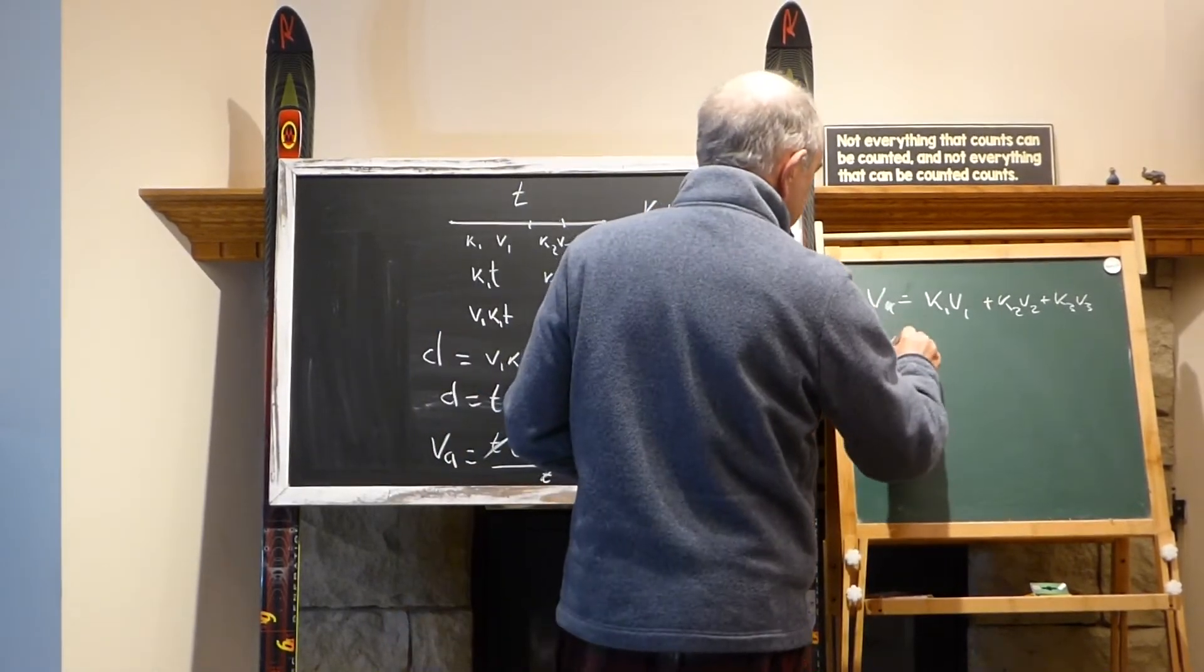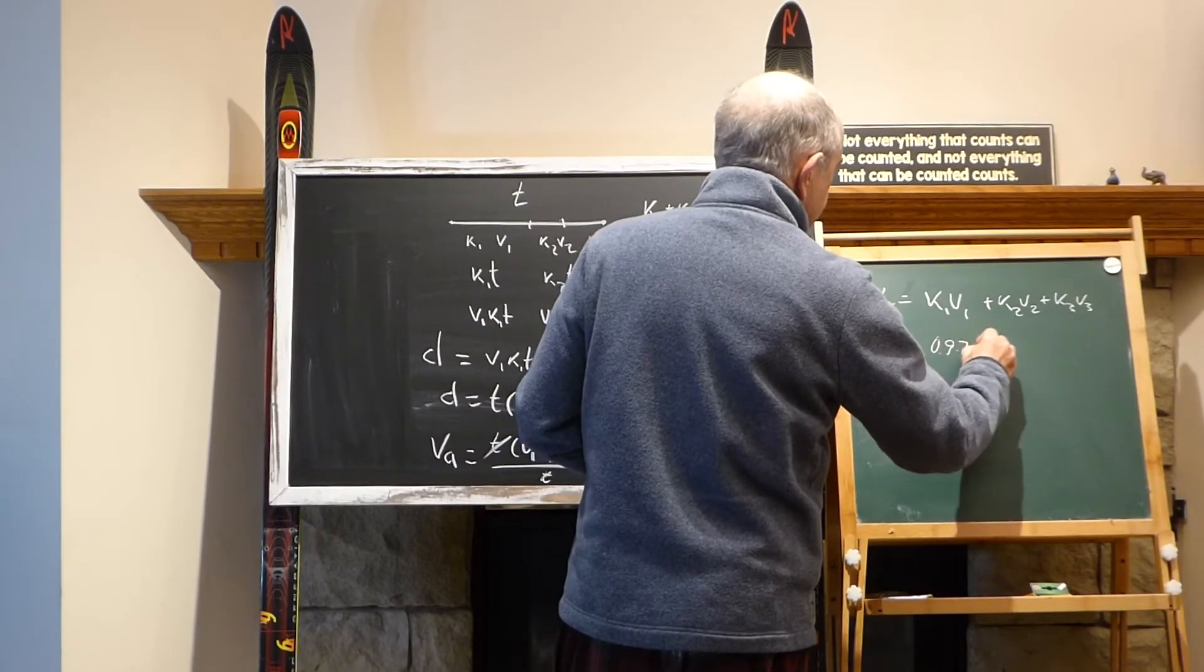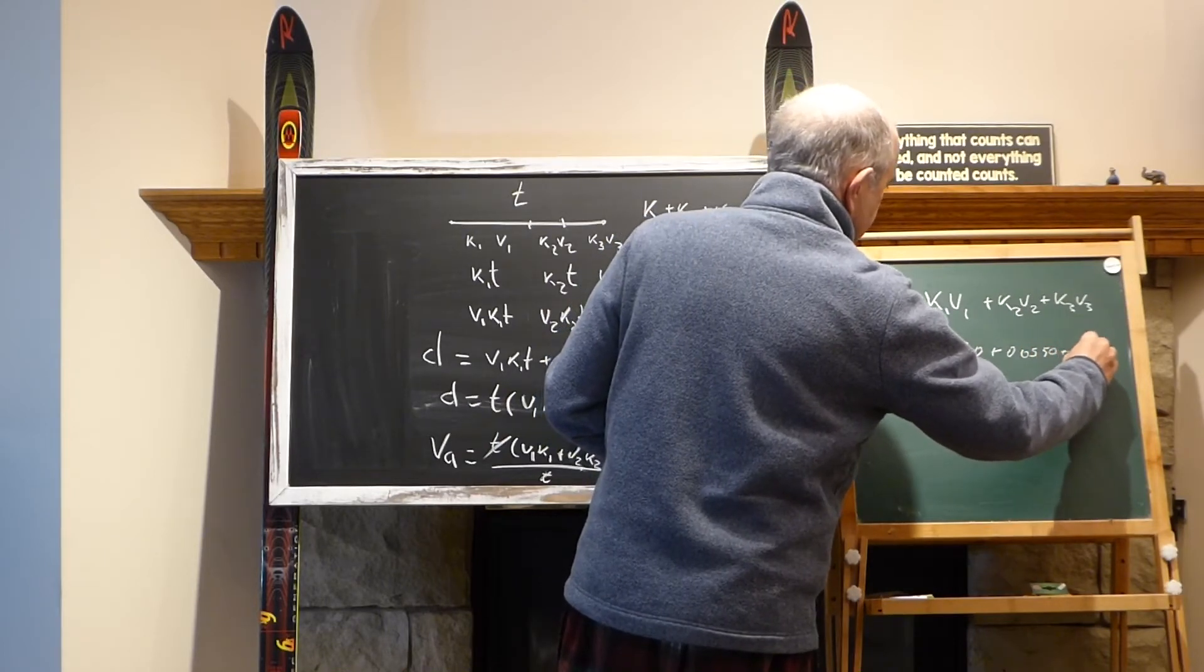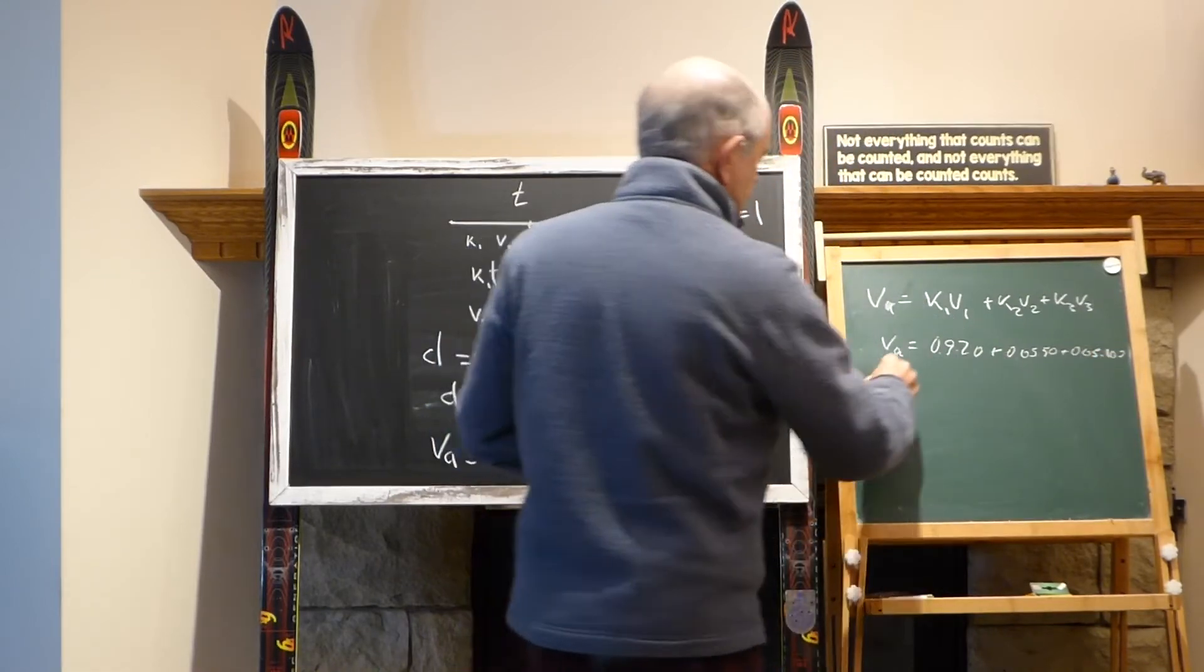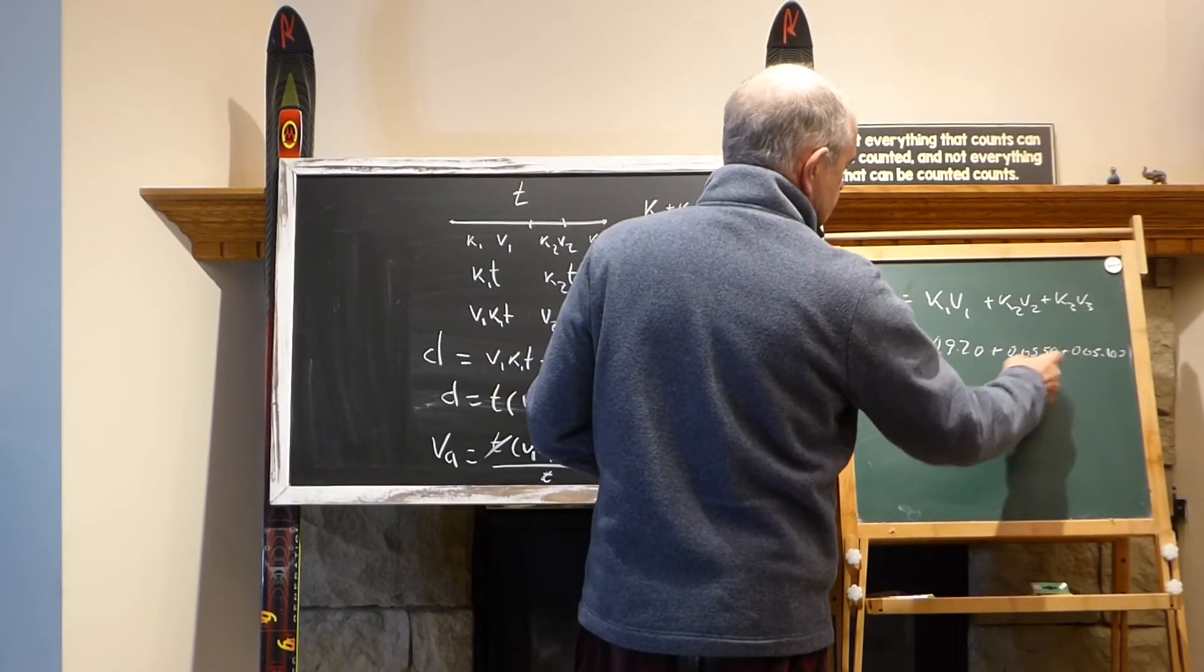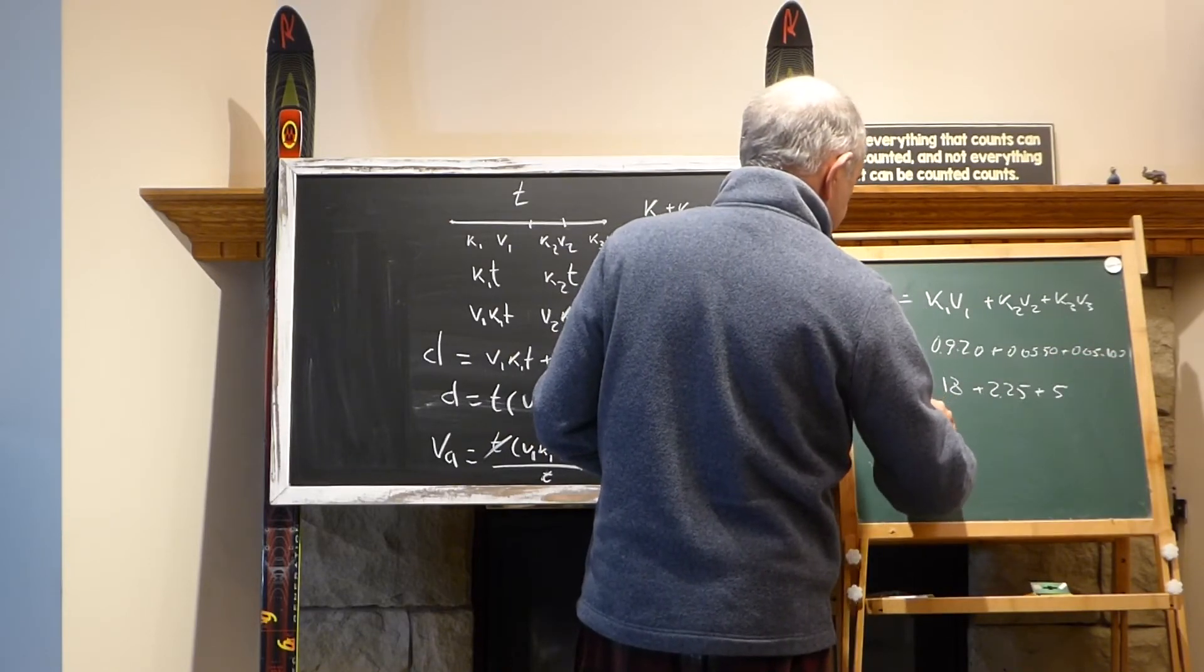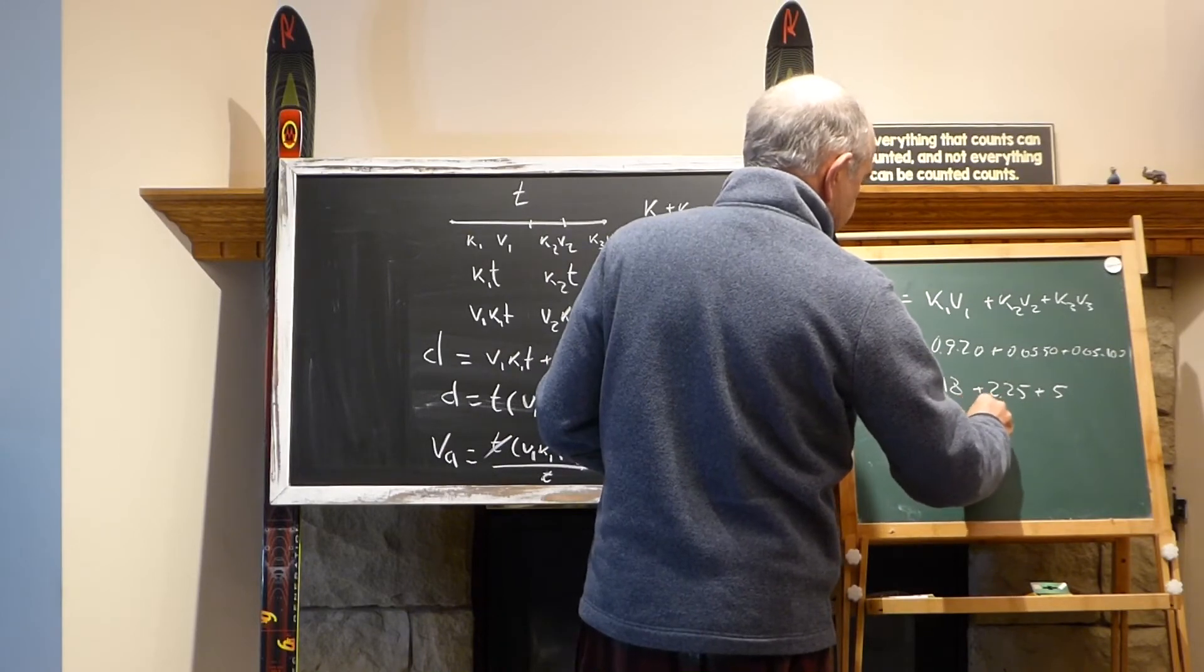Let's plug the numbers. We will receive v_average equals 0.9 multiply 20 plus 0.05 multiply 50 plus 0.05 multiply 100. v_average becomes, this is 18, this is 2.5, and this is 5. So v_average becomes 25.5.